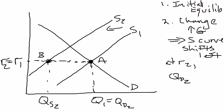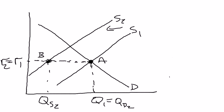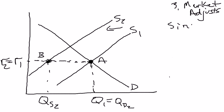So quantity demanded 2 exceeds quantity supplied 2. This is not an equilibrium, so we have to ask how this market is going to adjust. Since there's a shortage, there's some firm with a great investment project who can't get the funding they want at the current real interest rate. Therefore, that firm has an incentive to bid up the real interest rate, and so real interest rates start to rise.